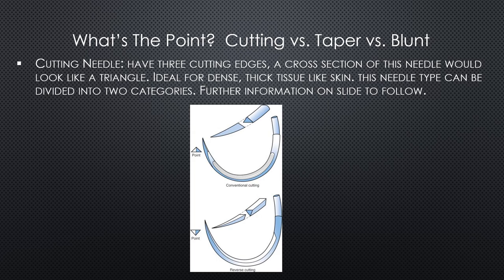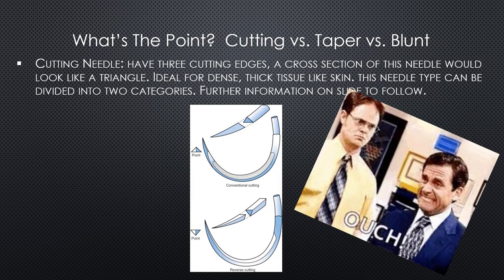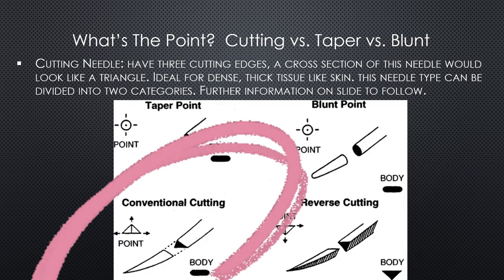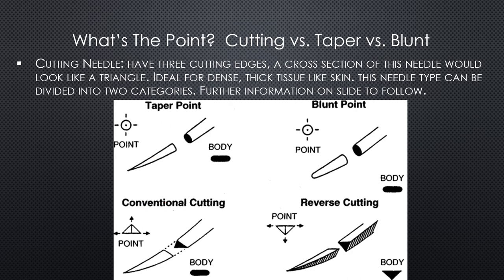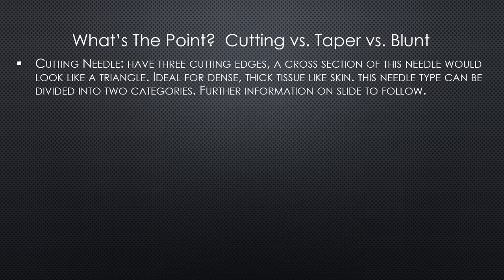The cutting needle is designed for penetration of dense, irregular, and relatively thick tissue. Cutting needles have three cutting edges, so if you took a cross-section of these needles they would actually look like a triangle. It's important to note that this category is divided into two subcategories: the conventional cutting needle and the reverse cutting needle. We'll get into more detail on the difference between those two in the next slide.